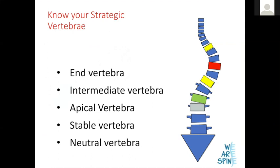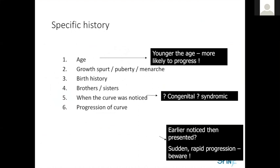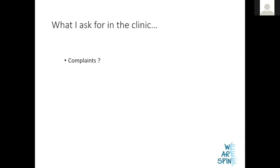You should know your strategic vertebrae because if you reach the point of an x-ray in your exam, you will be asked this — and it's pakka gold. Now the key part for a postgraduate: history taking in AIS. The specific questions are age — the younger the child, the more likely progression — growth spurt and timing of menarche or puberty, birth history, family history of similar conditions, when the curve was first noticed, and its progression: rapid or slow. Remember chief complaints and the onset, duration, and progress of chief complaints.